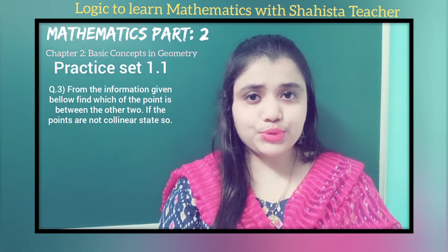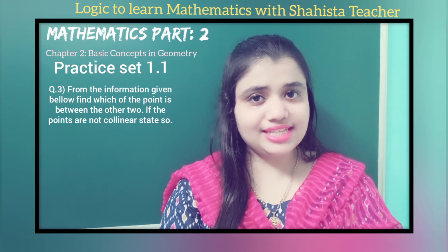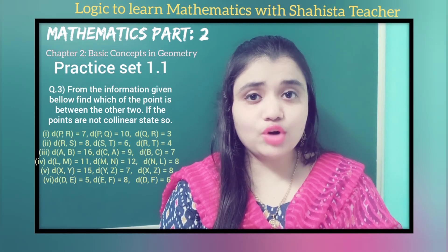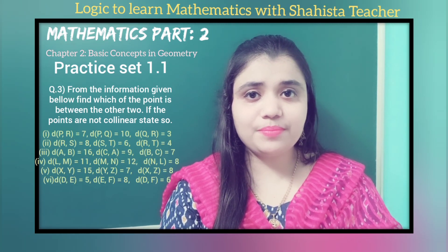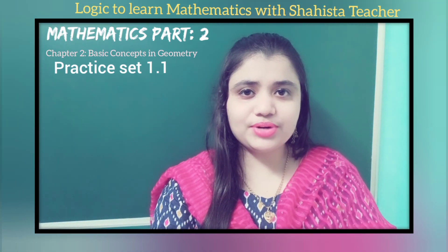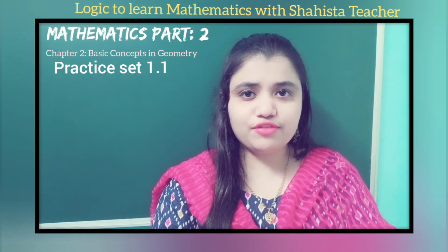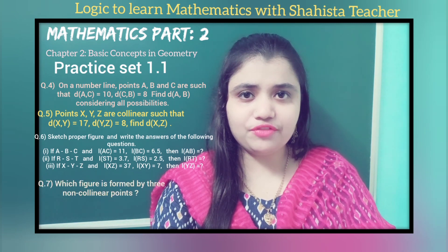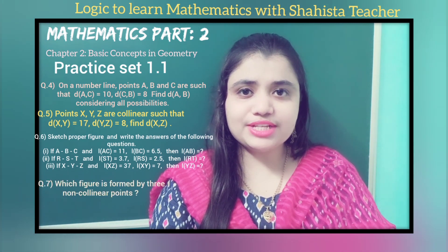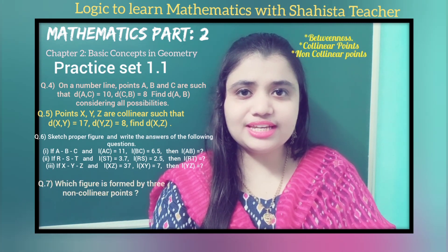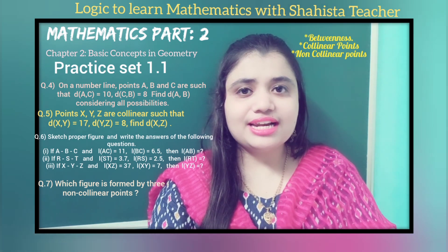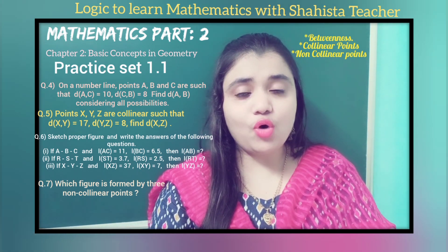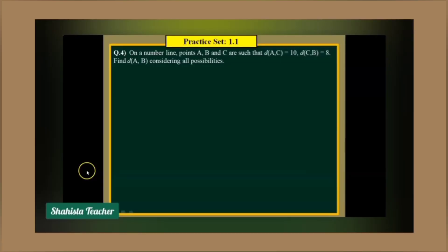Question number 3 had 6 sub-questions and we solved all 6 in our previous class. Today I am going to teach you question numbers 4, 5, 6, and 7 of practice set 1.1, which are based on betweenness and collinear and non-collinear points. Let's understand and solve all the questions one by one.